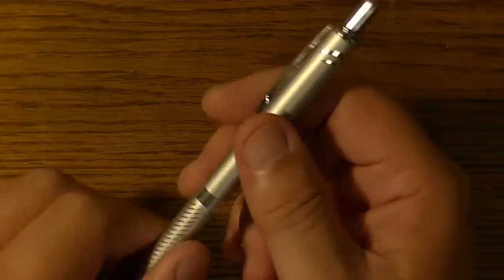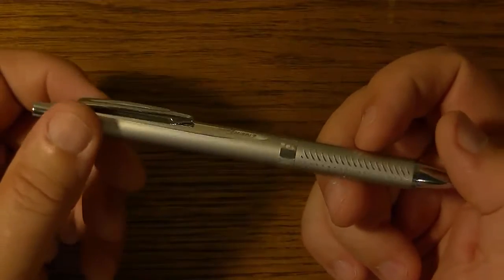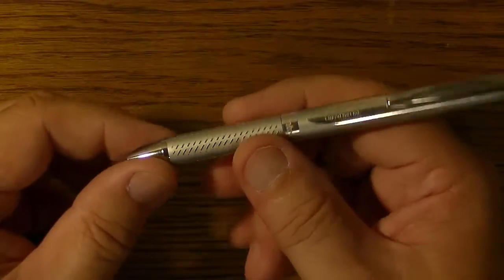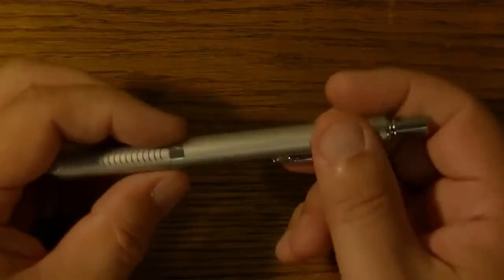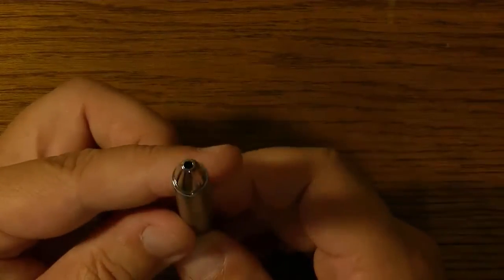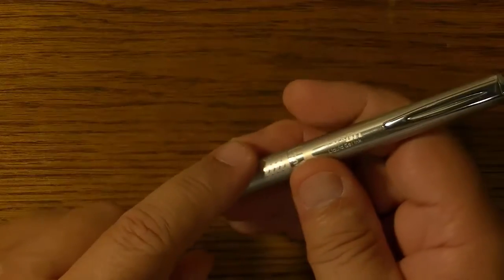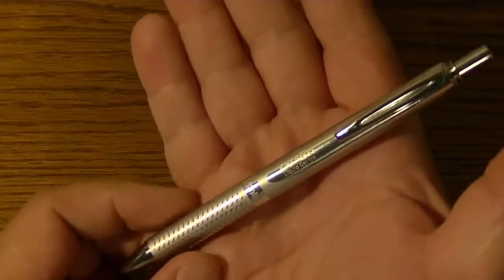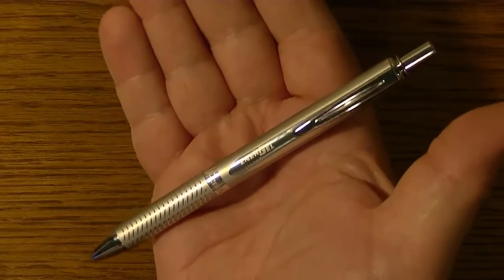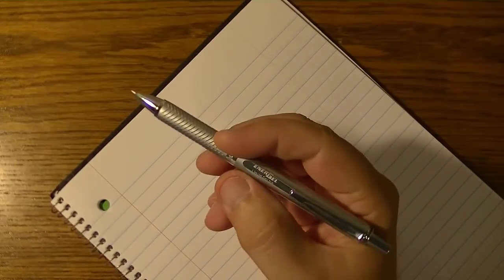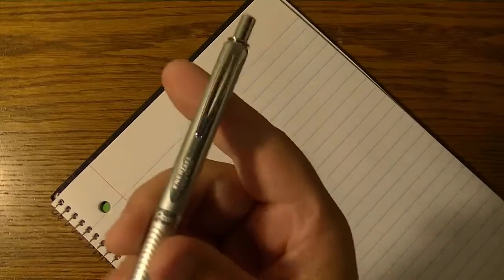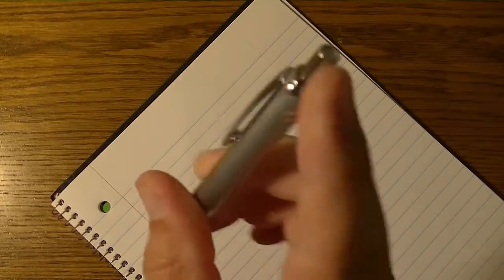Now this particular pen will accept any Energel refill. So if you don't like what it comes with go ahead and change it out for another one of the Energel inserts. Now the formulation of the ink in this particular pen is part liquid part gel. They take the best of both so that it would provide the kind of writing experience that you get with this BL407. Now I'm going to go ahead and write with it and give you my impression of what it's like to write with this really good looking pen.